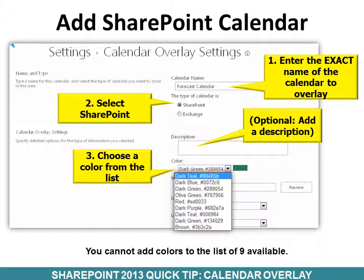It's a good idea to add a description, but that is optional. Then choose a color from the list. There are only nine colors available, so if you have 10 calendars that you want to overlay, you won't have a unique color for each.